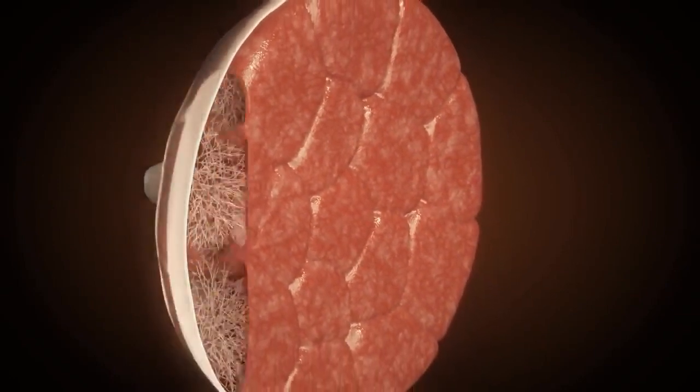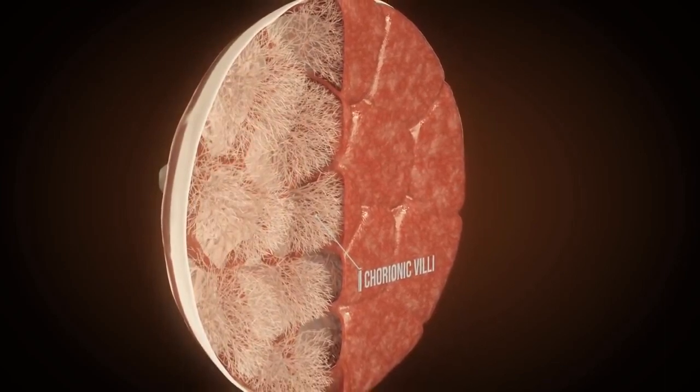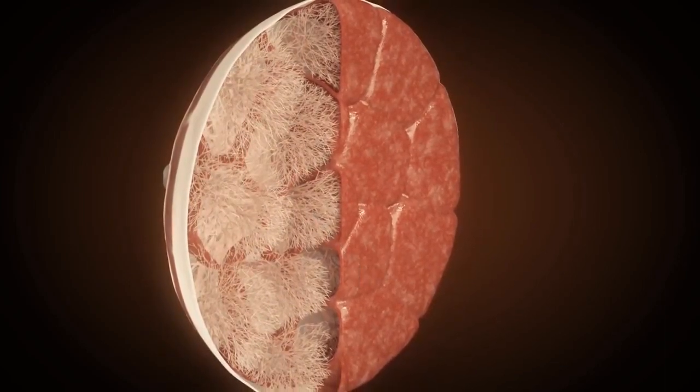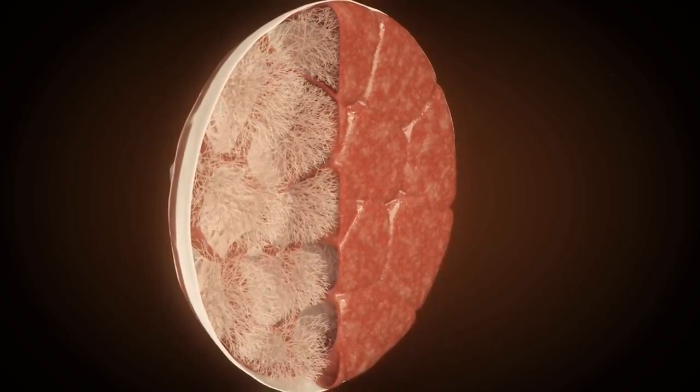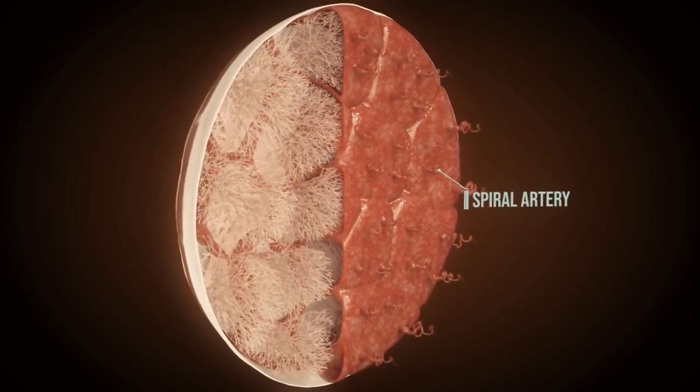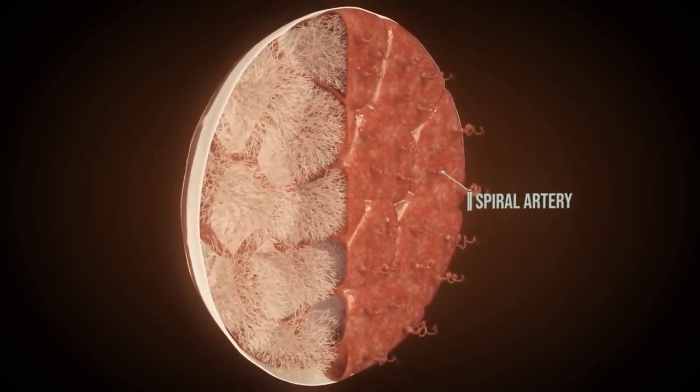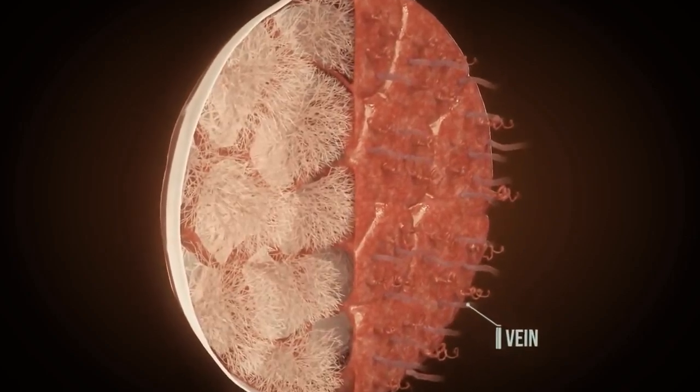The chorionic villi, which were previously completely distributed over the chorion, have regressed to other parts of the uterus. The remaining villi are part of the placenta. Maternal blood, rich in oxygen and nutrients, enters the intervillus space via the arteries. Veins carry away the oxygen and nutrient-poor blood.